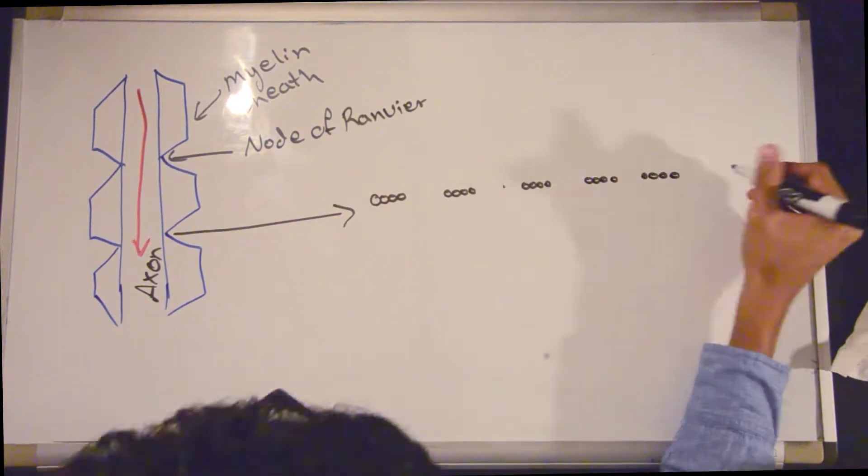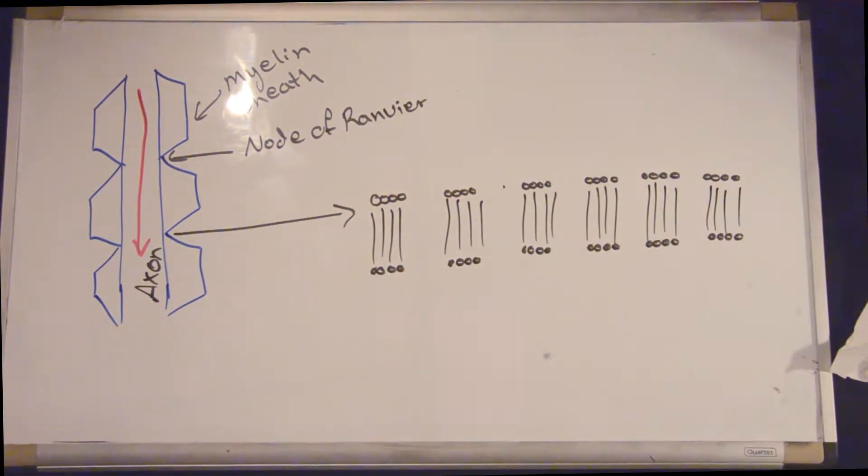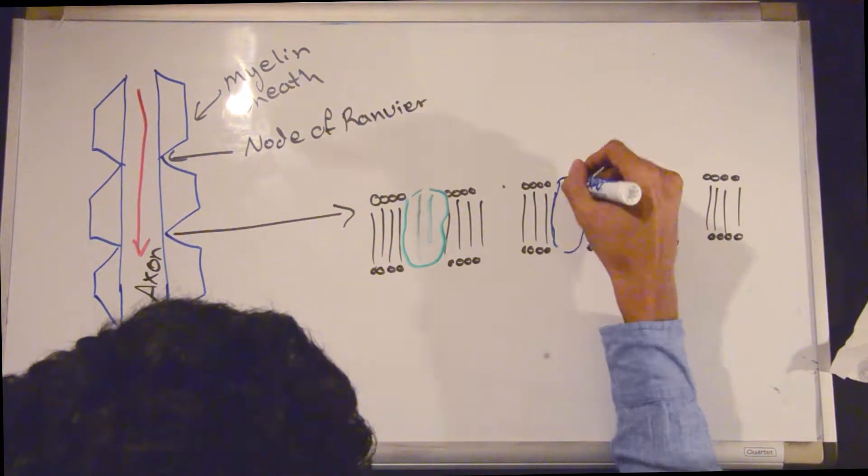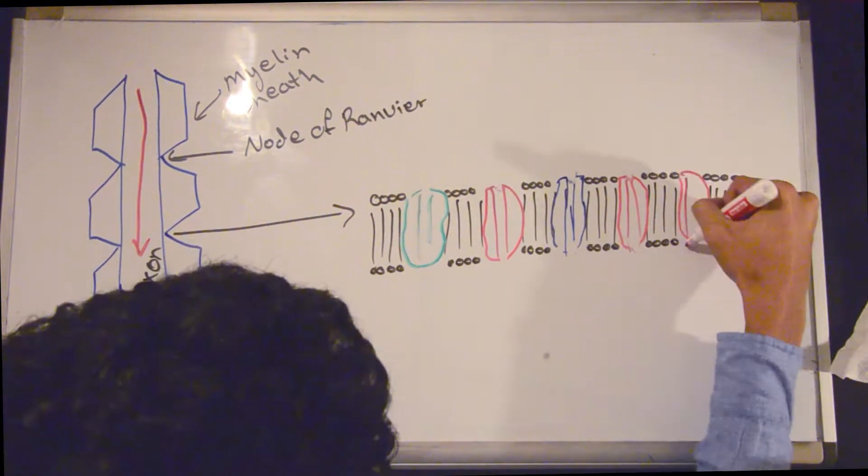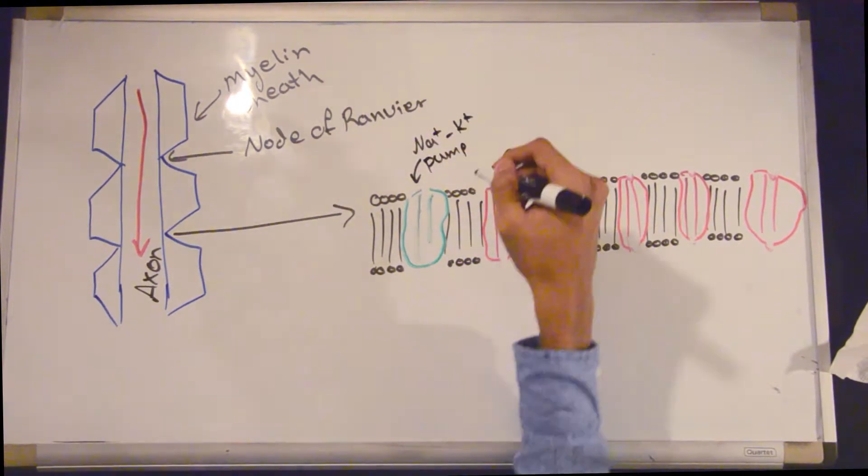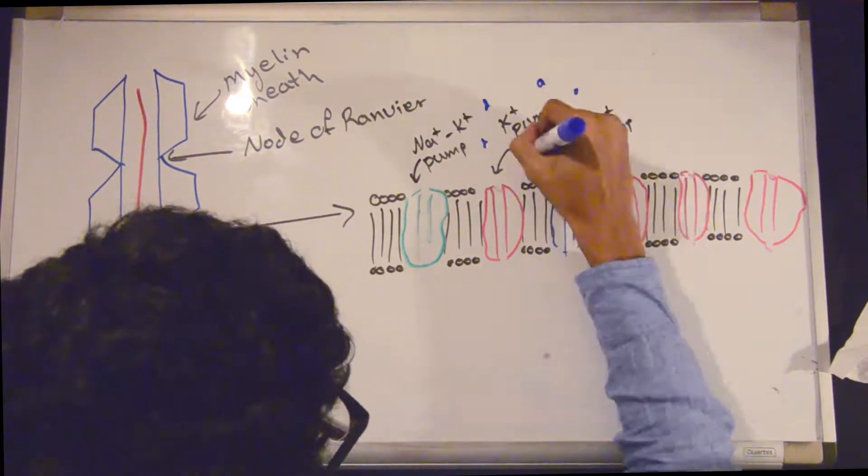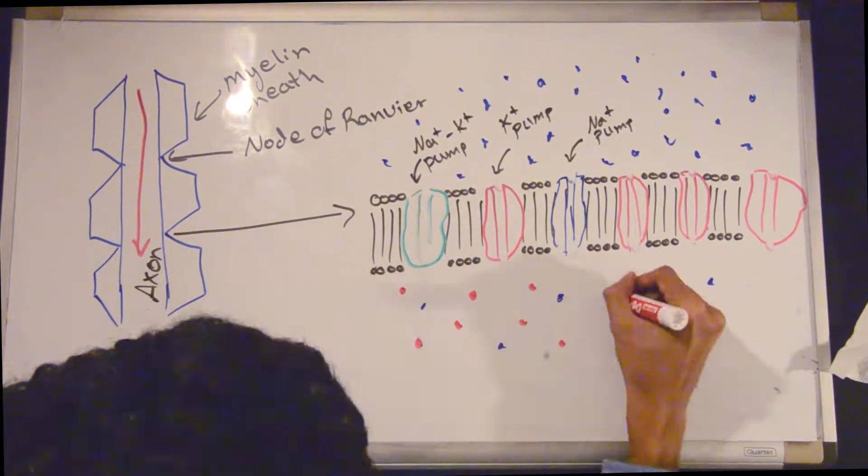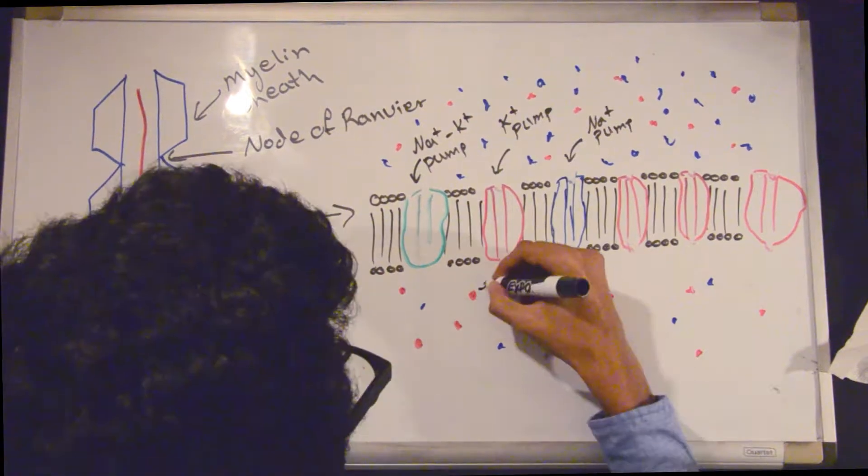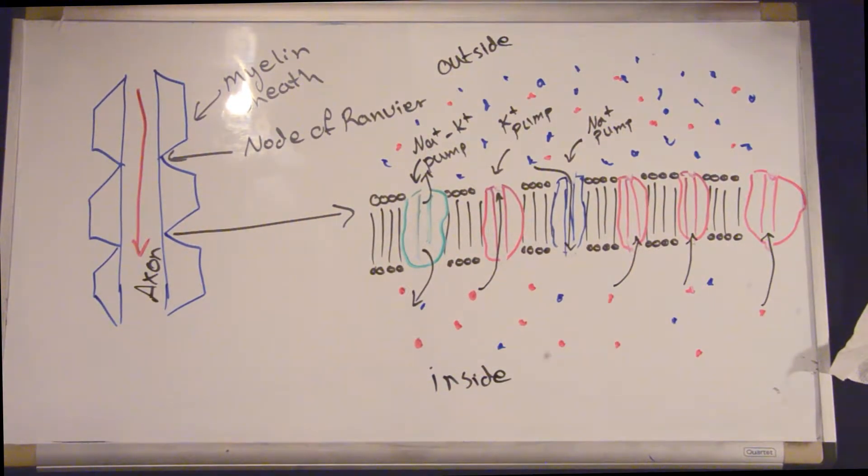These channels and pumps consist of sodium potassium pump, a sodium channel, and potassium channel. These channels and pumps are activated, changing the action potential. The blue channel shows the sodium channel and the red channel shows the potassium channel and their corresponding ions. The green one shows the sodium potassium pump.